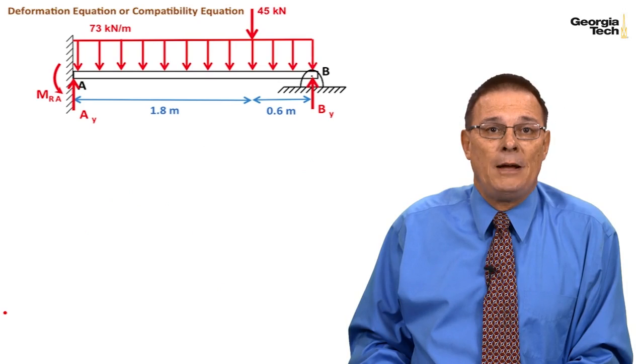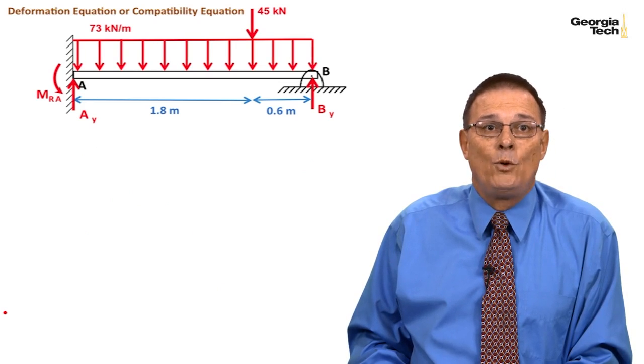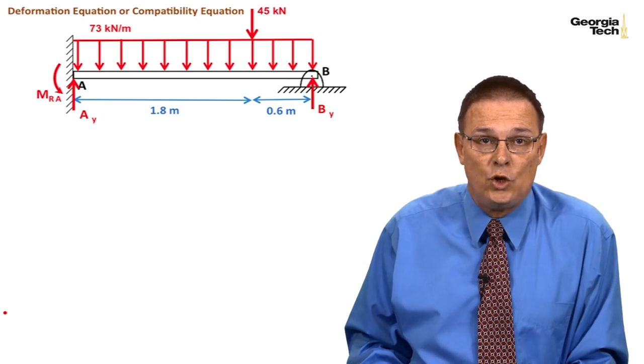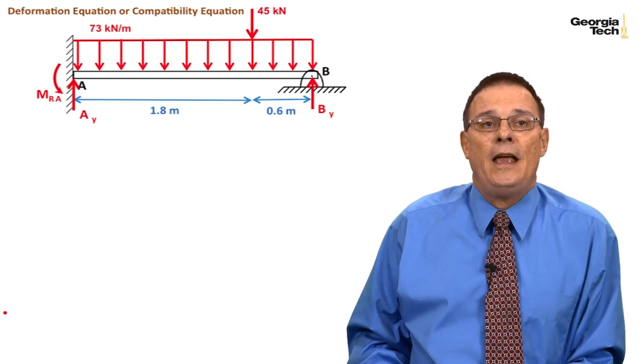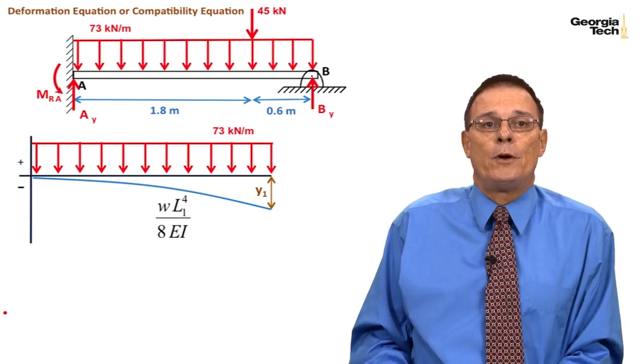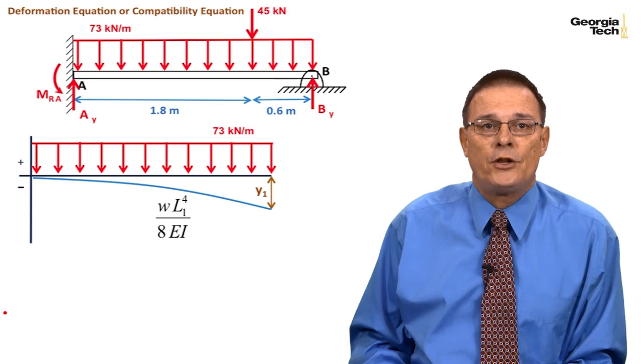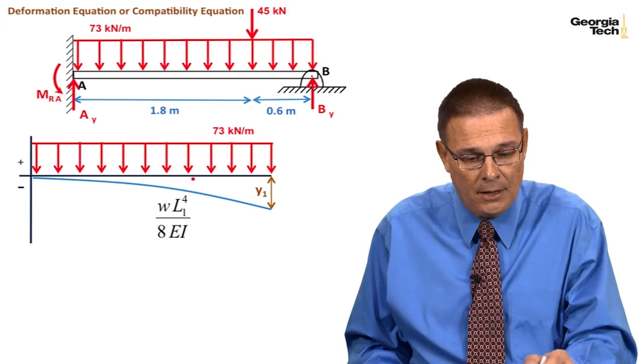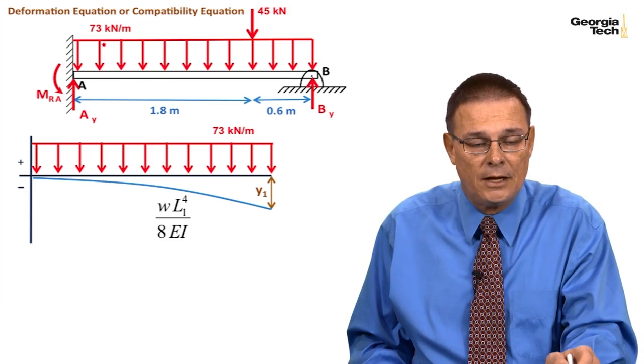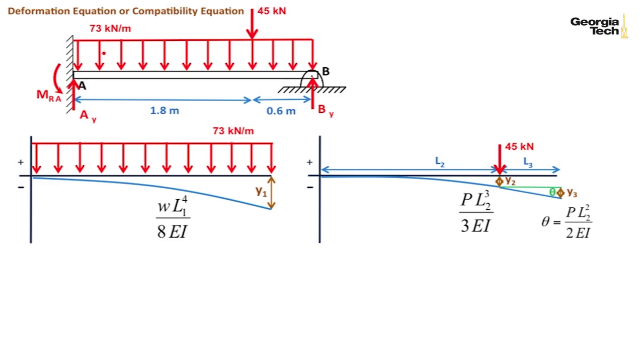Here is my beam loading situation. I'm going to write a deformation equation using superposition techniques. Based on this loading, I can superimpose several different loads. First, this is the loading done by the distributed load of 73 kilonewtons per meter. Then we have a loading due to the 45 kilonewton point force here at 1.8 meters out. We have a slope at the end. This portion of the problem is similar to what we did in the last module with the falling water beam example.